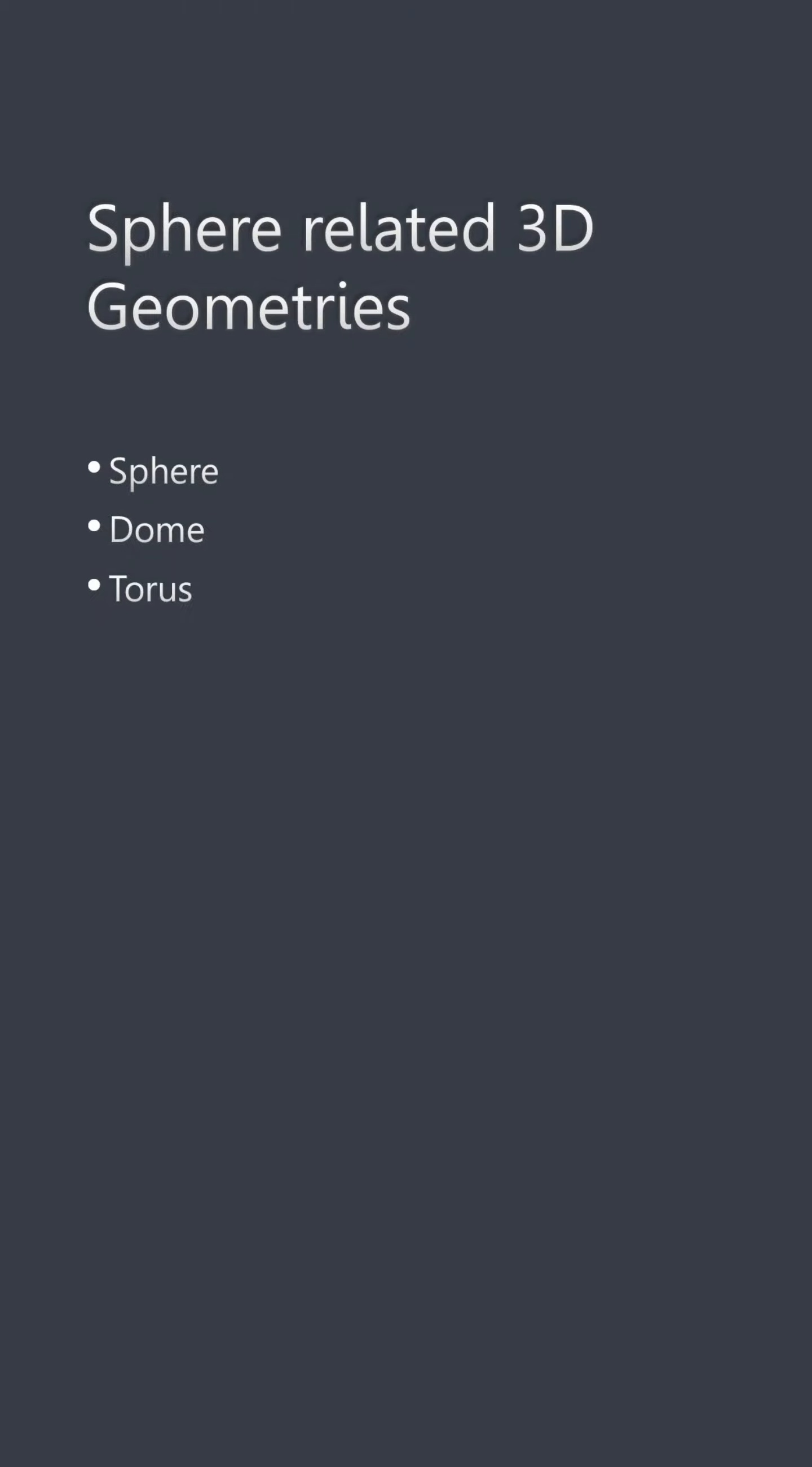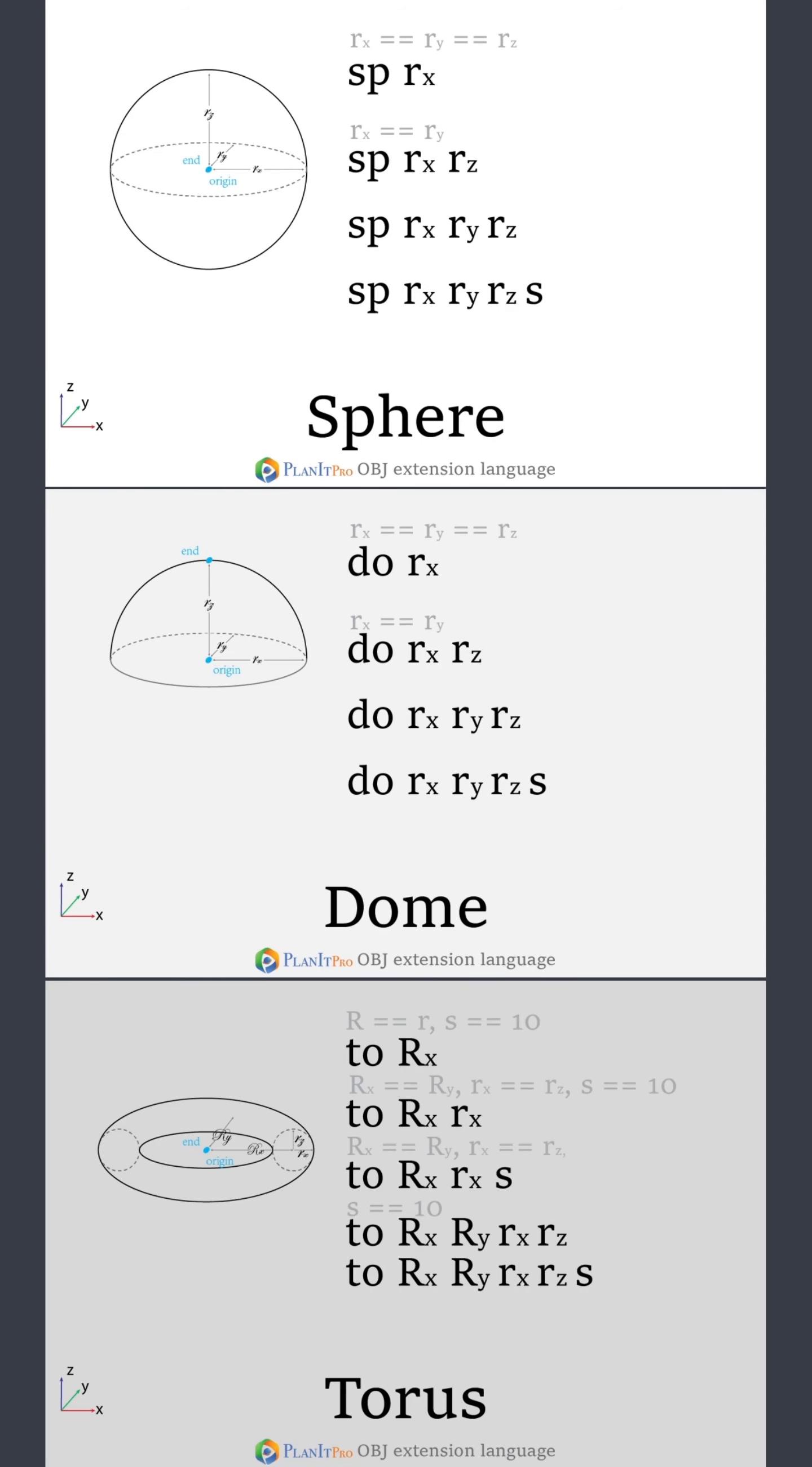The last group of geometries are spherical types of shapes. These are the sphere, the dome, and the torus. To create an oval or an egg shape you can define different radii for the x, y, and z axes.